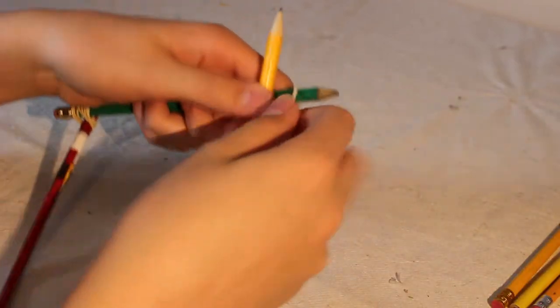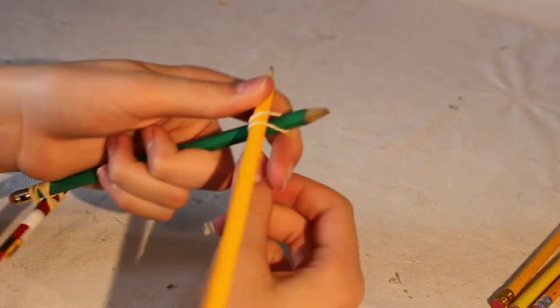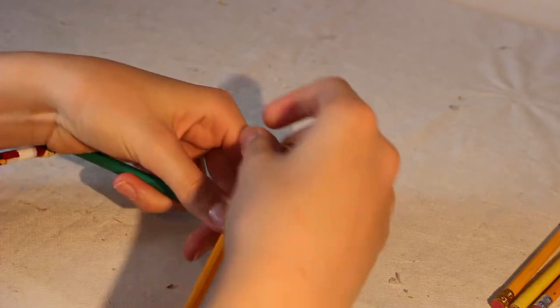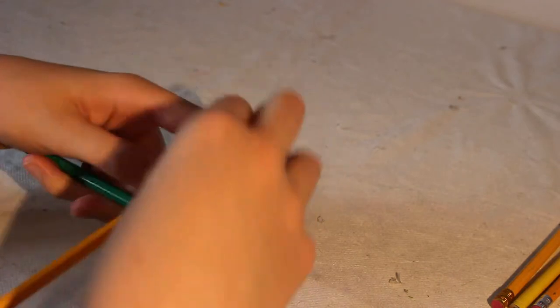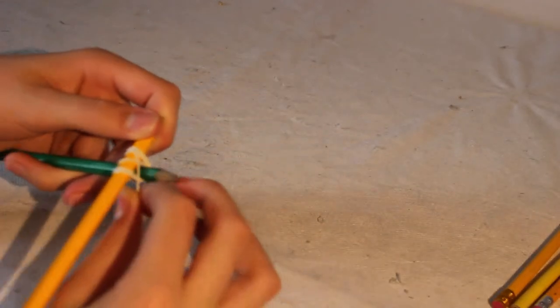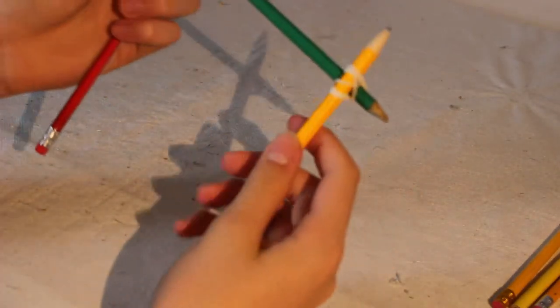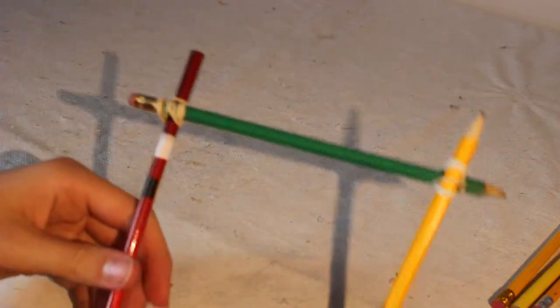So now we're going to do the same thing for the top. Just wrap it under the bottom one and over the top and just round in circles up and over and down and under.